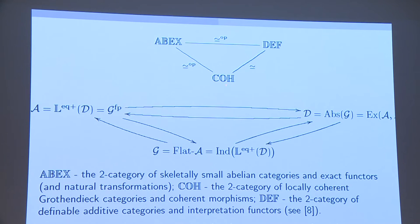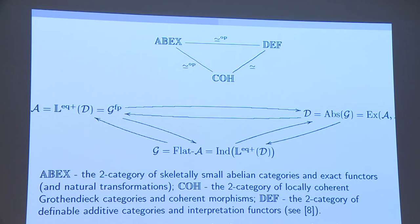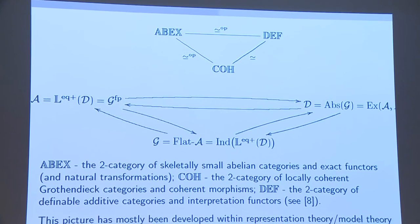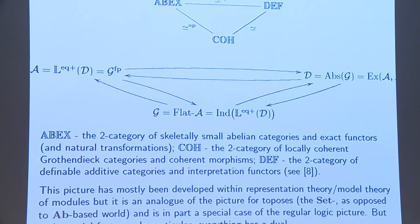This is the 2-category of locally coherent Grothendieck abelian categories — those are Grothendieck categories which are locally finitely presented. They've got a generating set of finitely presented objects, and those objects are coherent. One definition is that every finitely generated sub-object should itself be finitely presented. The maps are coherent morphisms — adjoint pairs where the left adjoint is exact and preserves coherent objects.